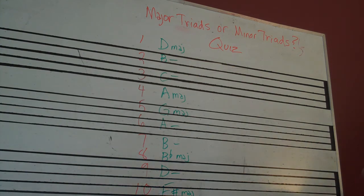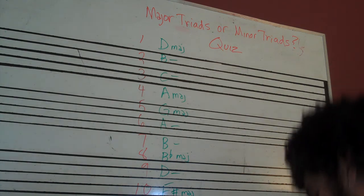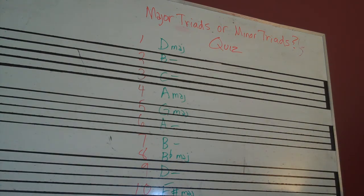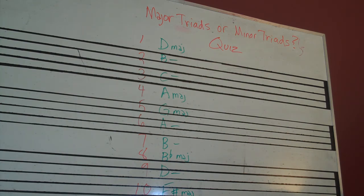Hopefully you did pretty well on this. You really want to try to hear that third — which is it? If this is C major, and here is C minor — hear the darker quality of that third, or at least that's how some people like to refer to it. That's C minor to C major. Hopefully you did pretty good on that, and we'll see you next time, bye.